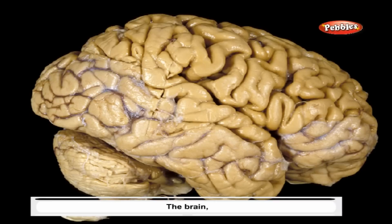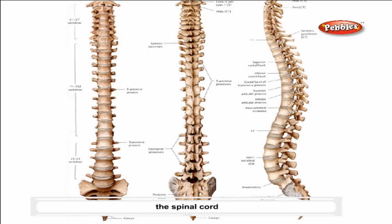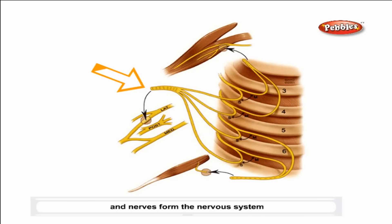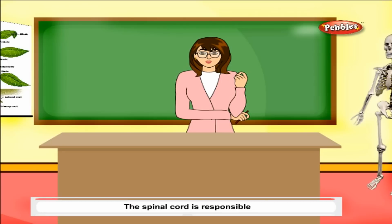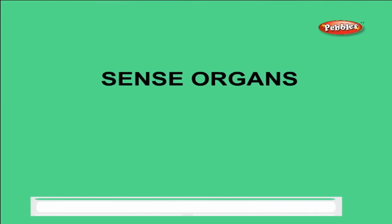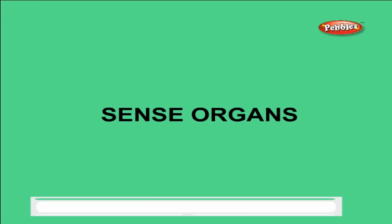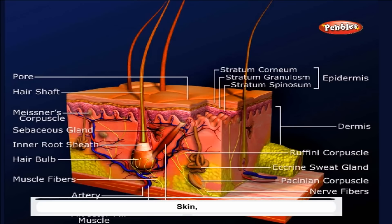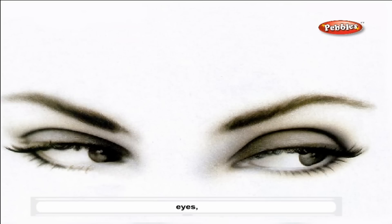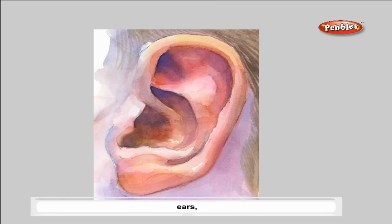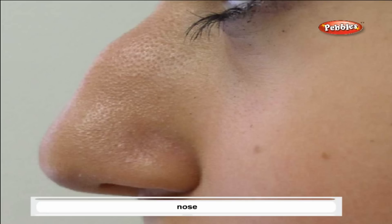The nervous system controls the different organs of our body. The brain, the spinal cord, and the nerves form the nervous system. The spinal cord is responsible for reflex actions in our body. The sense organs — skin, eyes, ears, nose, and tongue — are the sense organs in our body.